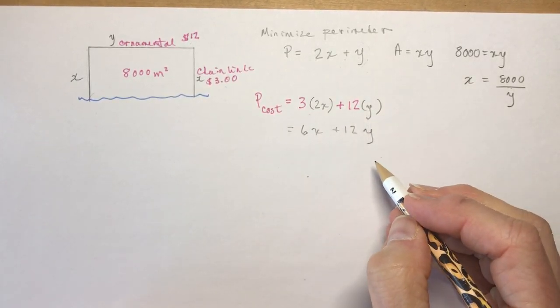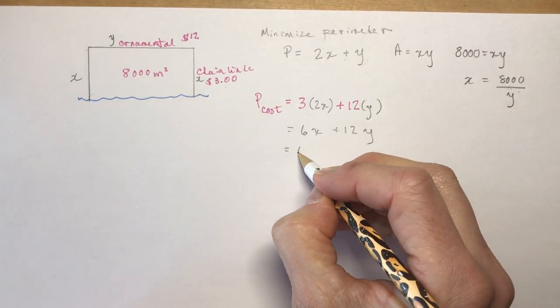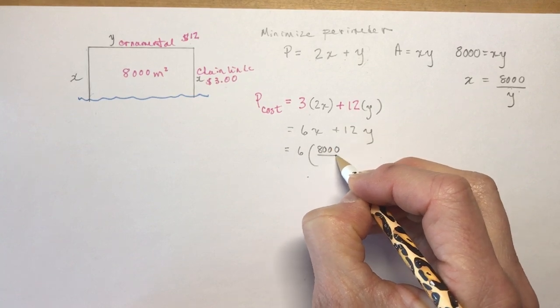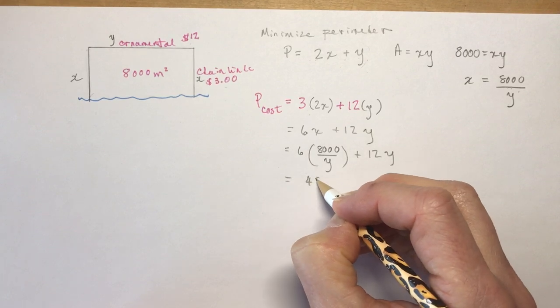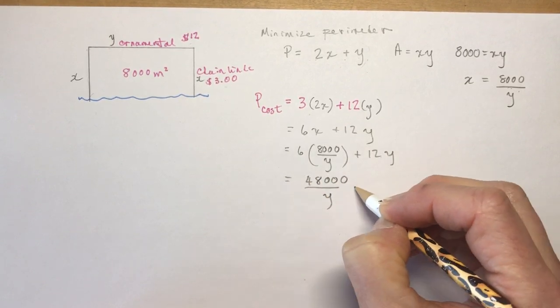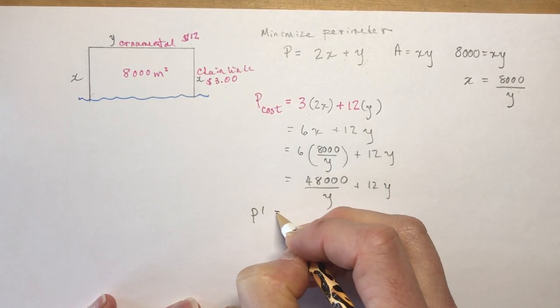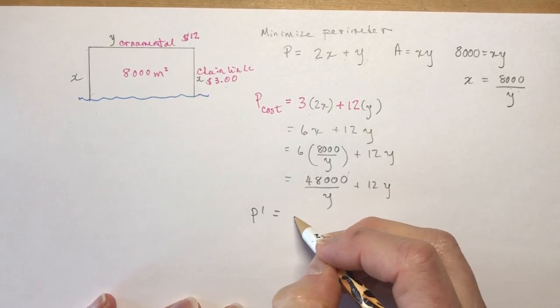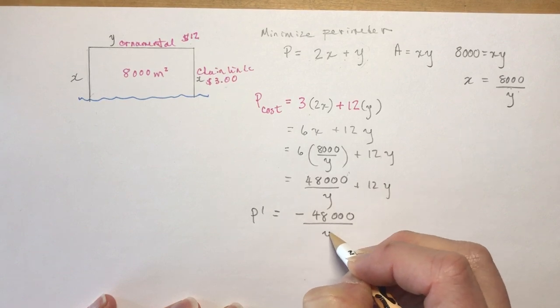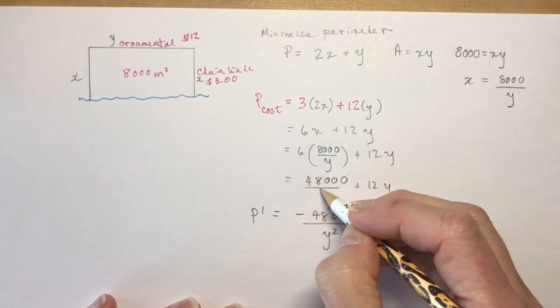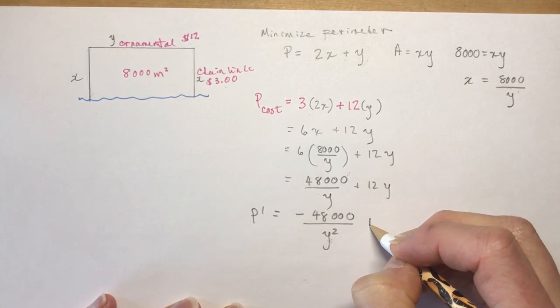Let's work with that and then we're going to substitute this in. So I have 6x + 12y. 6x + 12y and my x is going to be 8,000 over y plus 12y, and that's going to give me 48,000 over y plus 12y. Now let's take the derivative. So we'll say P' equals—this is y to the negative one—so negative 48,000 over y². You got all that? I'm a negative y to the negative two, put the y to the negative two down here. And the derivative of 12y is 12.